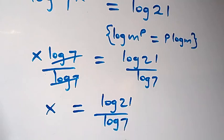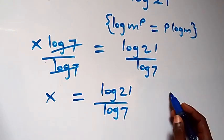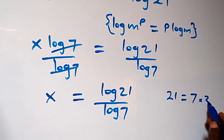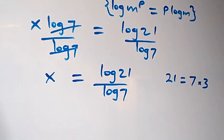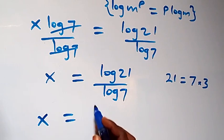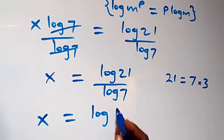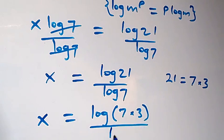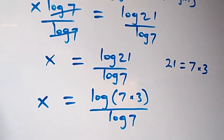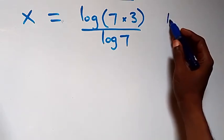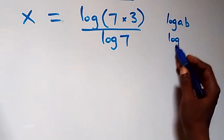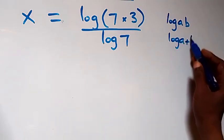Also from here, 21 can be written as 7 times 3. So we have x equals log(7 times 3) over log 7. Applying the logarithm product law — log(a times b) equals log a plus log b — we expand the numerator.